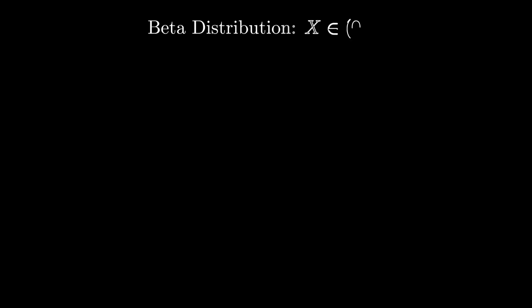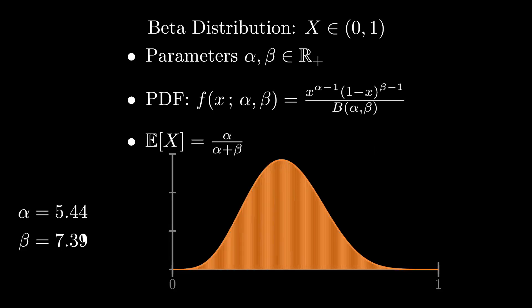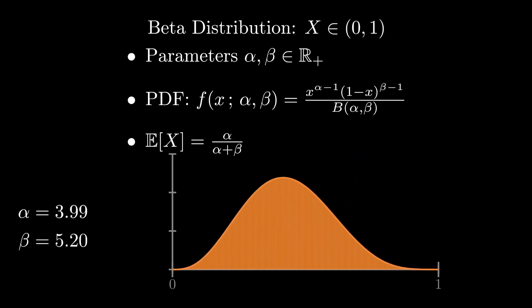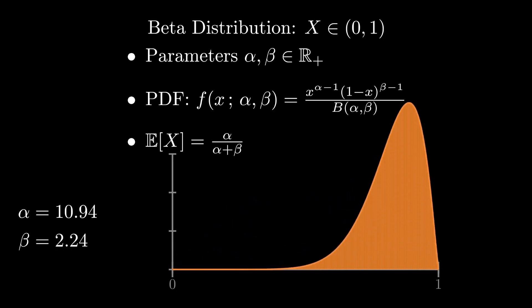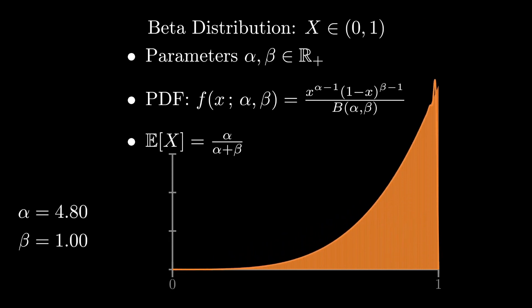The beta distribution is another distribution that's inexplicably named after its normalization constant. The beta function is closely related to the gamma function from before. The key characteristic of the beta distribution is that it only has support between zero and one. It takes two parameters, both of which must be positive real numbers. The beta distribution comes up most often when you want to model the uncertainty associated with the parameter of another distribution, such as a Bernoulli.